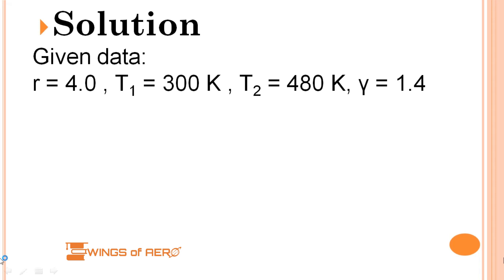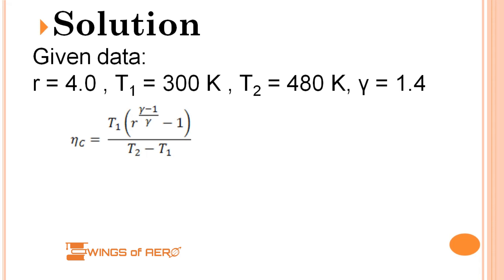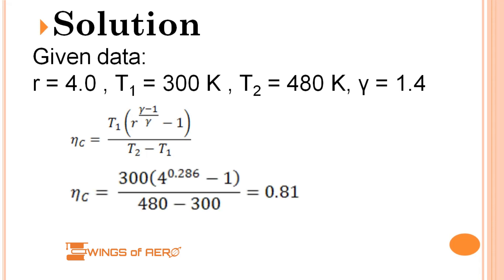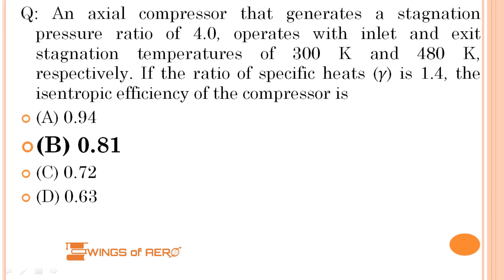Here are the given data: compressor pressure ratio r_c is 4, inlet temperature T1 is 300 K, exit temperature T2 is 480 K, and gamma γ is 1.4. The formula for axial compressor isentropic efficiency is: η_C equals T1 times (r_c^((γ−1)/γ) − 1) divided by (T2 − T1). Substituting all given values, we get η_C equals 0.81. So the correct answer is option B, 0.81.